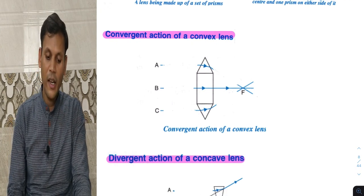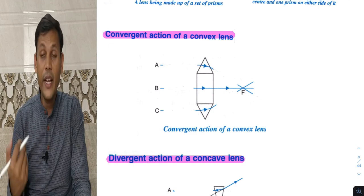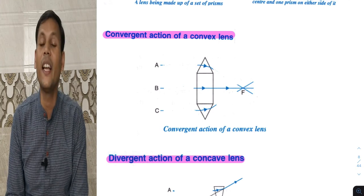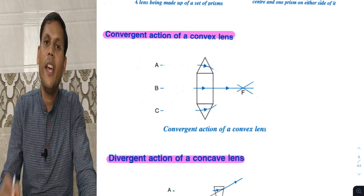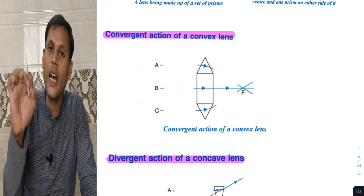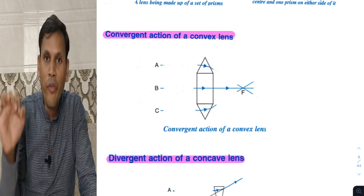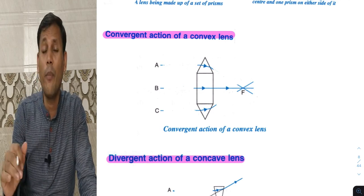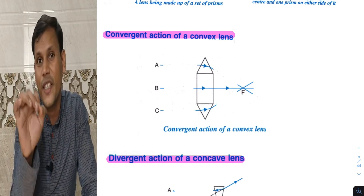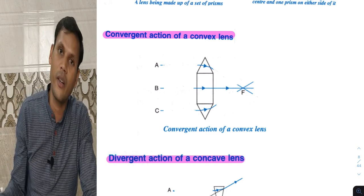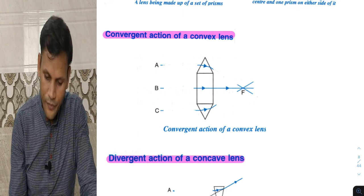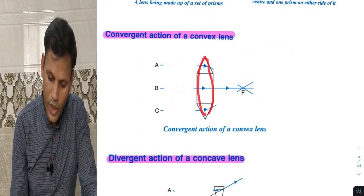Next part: convergent action of a convex lens. Convex lens is also called a converging lens. If parallel beams are passed through the lens, they all meet at a point called the focus or focal plane. All parallel beams converge, so a convex lens is also known as a converging lens.